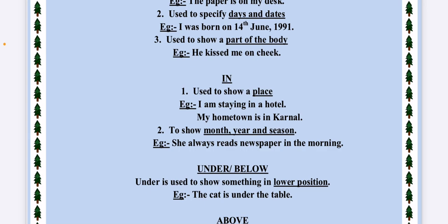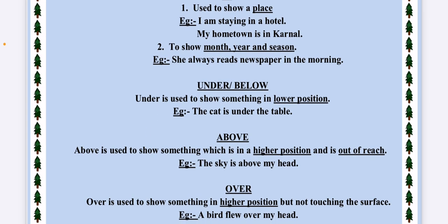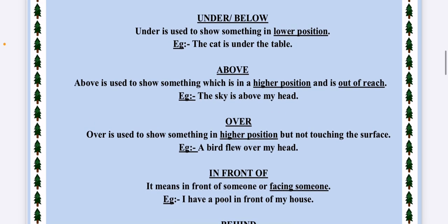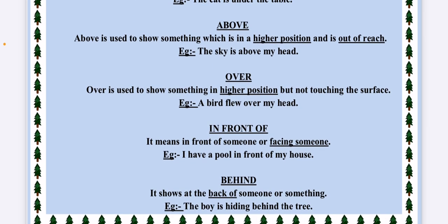The third preposition is UNDER or BELOW. Both are used to show something which is at a lower position, like the cat is under the table. Next preposition is ABOVE. The difference between on and above is that on is something which touches the surface, but above is much higher and is out of your reach. For example, sky is above my head. Next is OVER. Over is also higher position but it is between on and above. It is not touching the surface but not at much higher position. A bird flew over my head. The horse jumped over the fence.